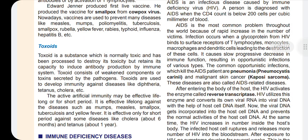Next are toxoids. Toxoids are neutralized and retained toxins used as vaccines. Toxoids are a form of artificial immunization. Vaccines can have long-lasting effectiveness while toxoids may vary in duration.